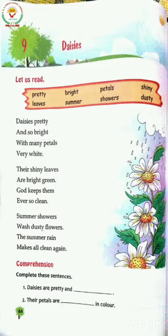Third word is Petals — P-E-T-A-L-S. Jo flowers ki pati hoti hai, isko petals bolte hai. Next word is Shiny — S-H-I-N-Y. Shiny means Chimkili.